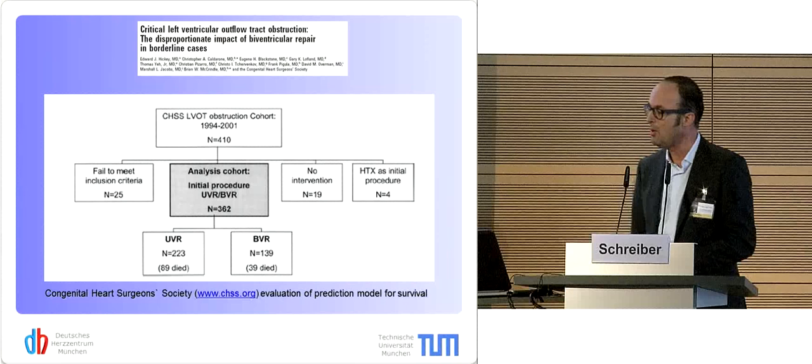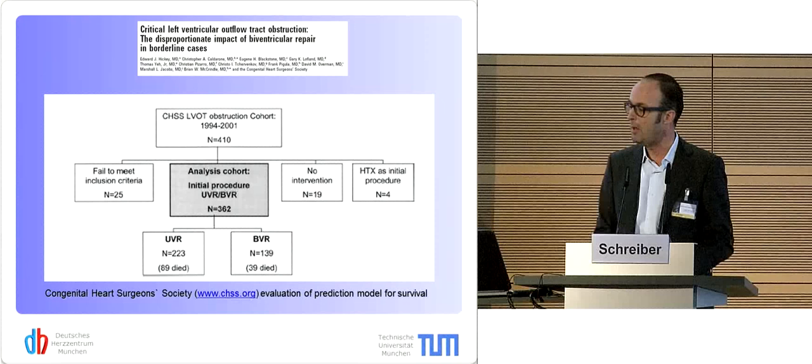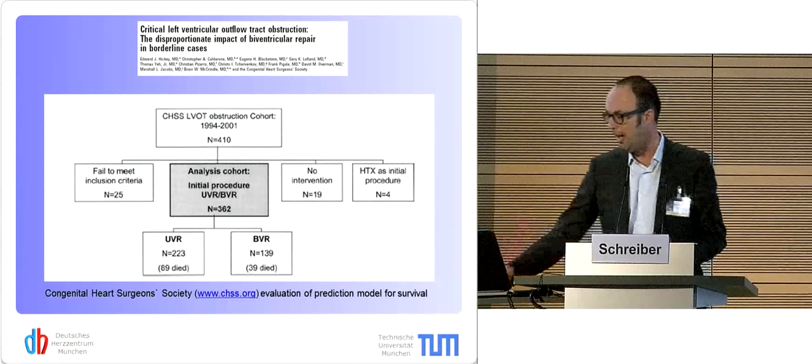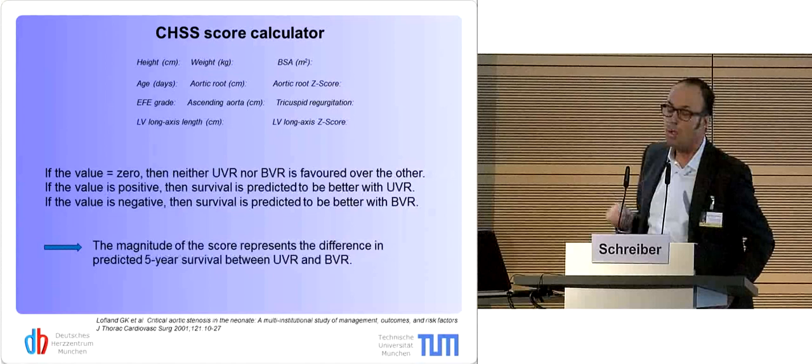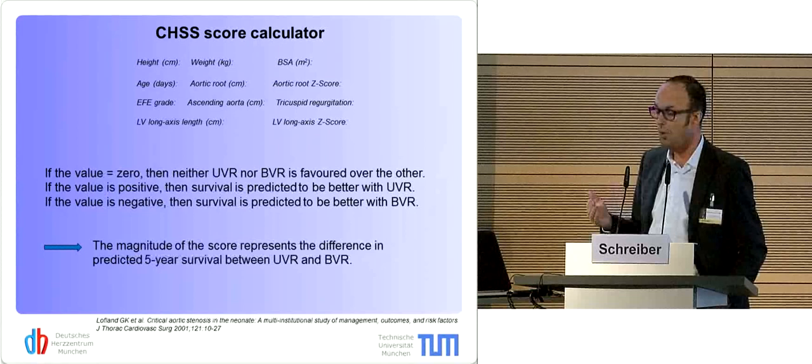I quite like this publication from an American group. They looked into critical left ventricular outflow tract obstructions and tried to elucidate what the predictors were to embark on either a univentricular pathway or biventricular repair. They applied a score calculator on a huge cohort to define the best route for each patient.